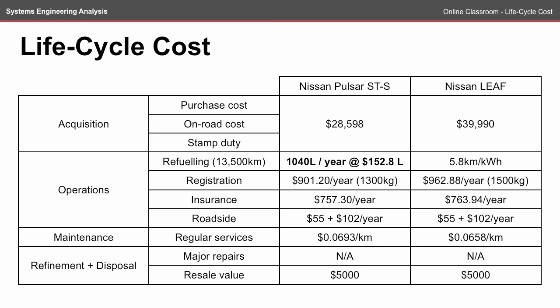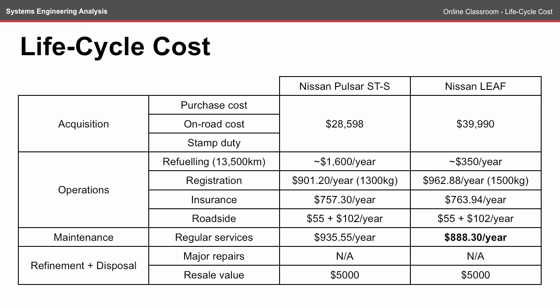Using our around-town estimation of 13,500 kilometres per year, the Pulsar will consume a bit over a thousand litres per year and at $1.52 per litre that works out to be about $1,600 per year. The Nissan Leaf works out to approximately 2,300 kilowatt-hours and at $0.15 per kilowatt-hour that calculates to be approximately $350 per year. Converting regular services to a per-year cost brings the Pulsar in at about $935 per year and the Nissan Leaf at just under $900 per year.